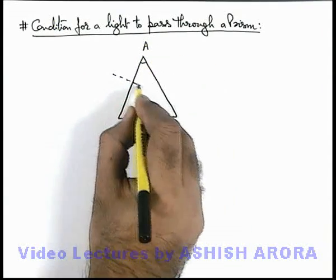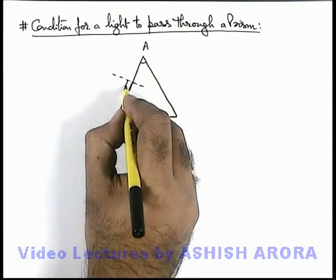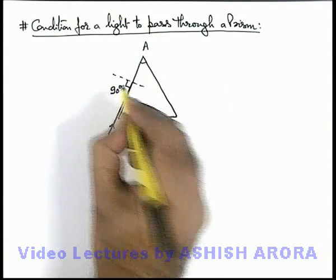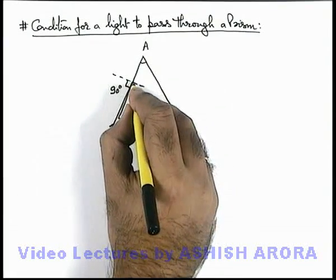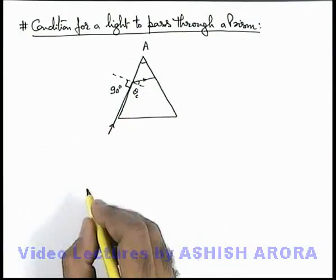and a light incident onto a matte surface in a grazing fashion, that means at i equals 90 degrees. We know that light will enter into the prism at critical angle theta c,